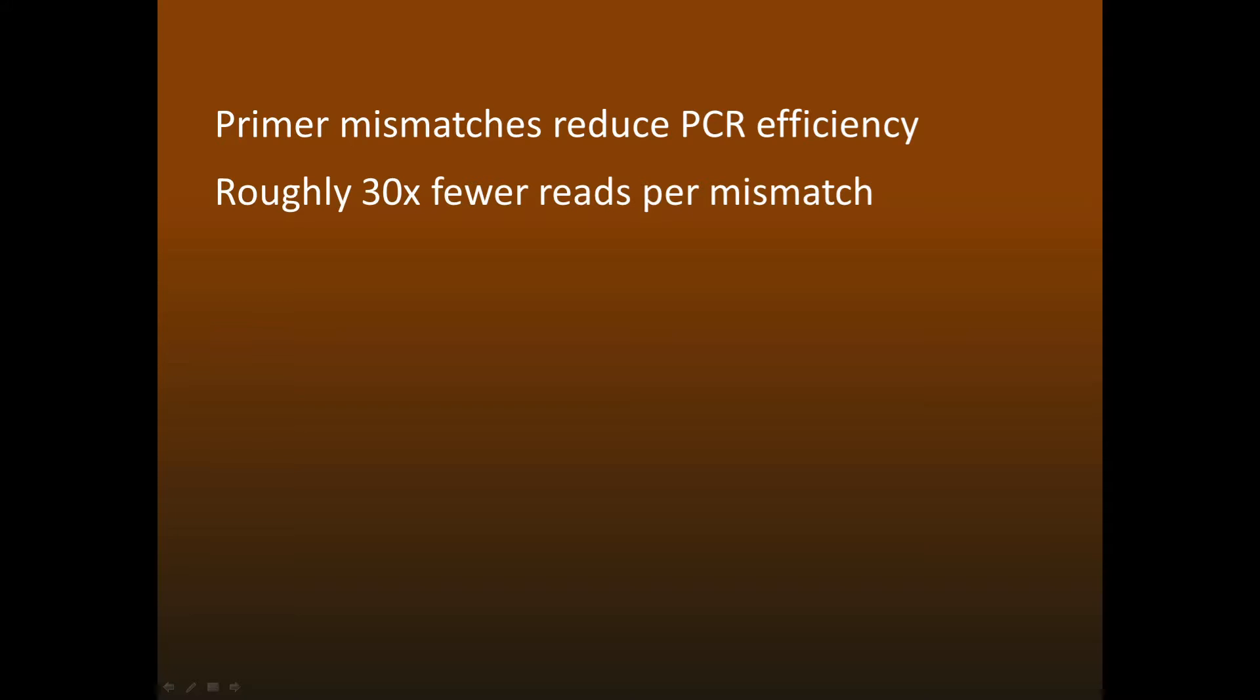Mismatches between the gene and your PCR primers reduces amplification efficiency. As a rule of thumb, you'll get something like 30 times fewer reads for each mismatched position. With commonly used primers, around 10% of species have at least one mismatch.